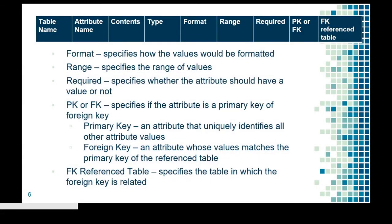For the next element, we have the format. The format specifies how the values would be formatted — for example, an ID format. The range specifies the range of values; for example, for age, 1 to 100, or 1 to 200 if there are ages beyond 100. Required specifies whether the attribute should have a value or not.